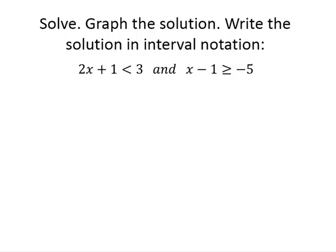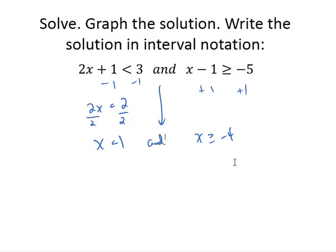Here's a sample exercise: solve, graph the solution, and write the solution in interval notation. We're given the compound inequality: 2x plus 1 is less than 3, and x minus 1 is greater than or equal to negative 5. We solve each piece individually. From the first: 2x is less than 2, so x is less than 1. From the second: x is greater than or equal to negative 4.